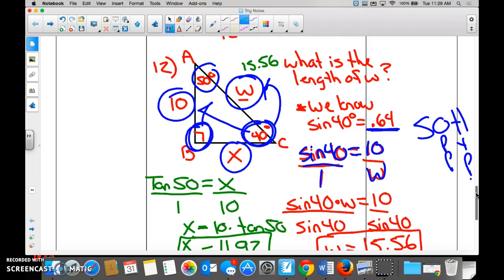So we now know that W is 15.56. So what is 10 divided by 15.56? It should be 0.64 because we know that any sine of 40 degrees, the ratio from opposite to hypotenuse is going to be 0.64, right?